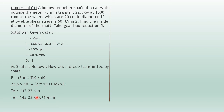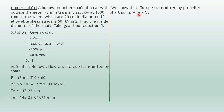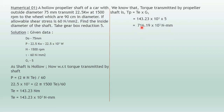We need the torque transmitted by the propeller shaft, not the engine. The torque transmitted by the propeller shaft is Tp = Te × G1. Substituting Te = 143.23 × 10³ and G1 = 5 (the gearbox reduction), we get Tp = 716.19 × 10³ N·mm.